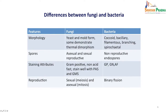Fungi can have different morphological forms — they can be yeast-like or mold-like and can grow at different temperatures, while bacteria are usually coccoid, bacillary, filamentous, or branching. Fungi multiply by asexual as well as sexual reproduction, while bacteria multiply only by binary fission, with non-reproductive endospores. Fungi can also be stained by different staining techniques compared to bacteria, which will be discussed in later slides.